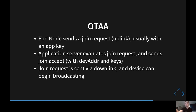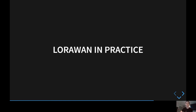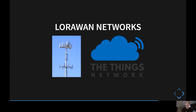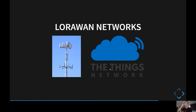Now, LoRaWAN in practice. In some countries, cellular towers have been outfitted with gateways, giving something like 90% coverage nationwide, though you'd need to contact the cellular company to use them. For others, there's The Things Network (TTN), which is an open network based on LoRaWAN. You can connect your own devices — both end nodes and gateways. If you connect a gateway, they provide a free network server and application server, but your gateway will also be usable by others nearby. On the flip side, you can use other people's gateways too, effectively giving you a free network.